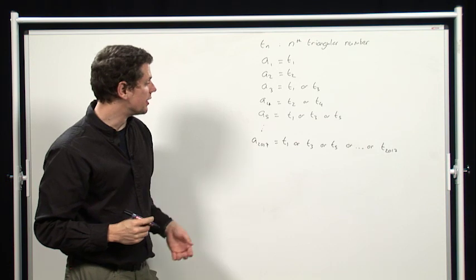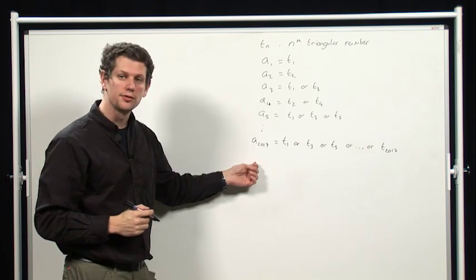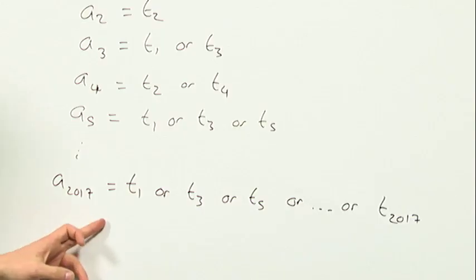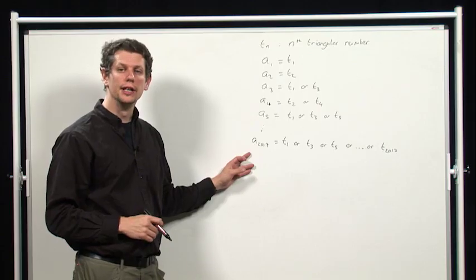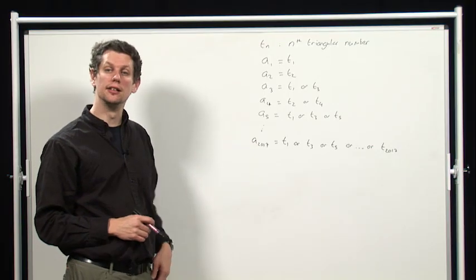So how many possibilities are there? Well, the number of different possibilities for A2017 is the same as the number of odd numbers up to 2017. And there are 1,009 of them. So the answer is 1,009. There are 1,009 possibilities for what A2017 can be.